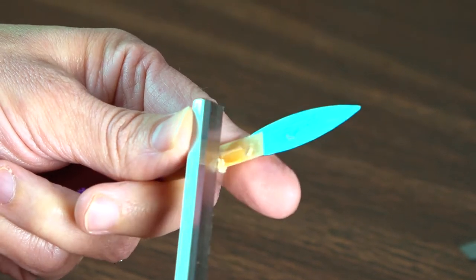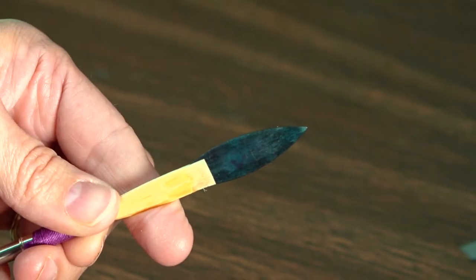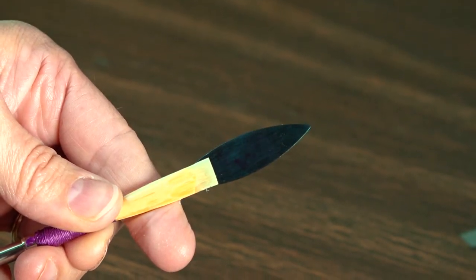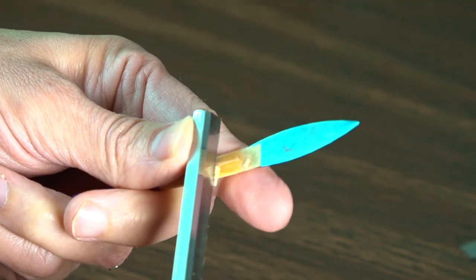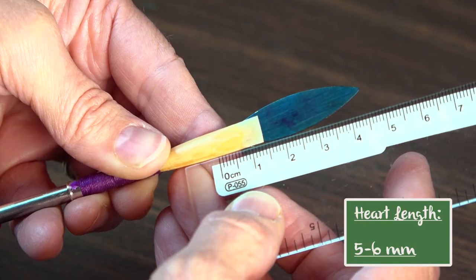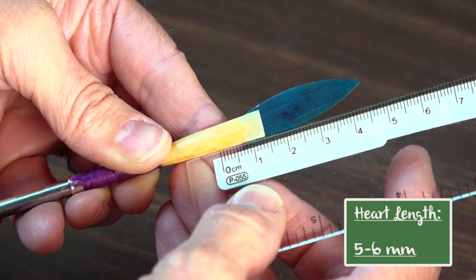Each stroke should follow through across the V-line. As you scrape the heart, you will see two U-shapes emerge on either side of the spine. Keep working your way back with small strokes. The total length of the heart will be about 5 to 6 millimeters.